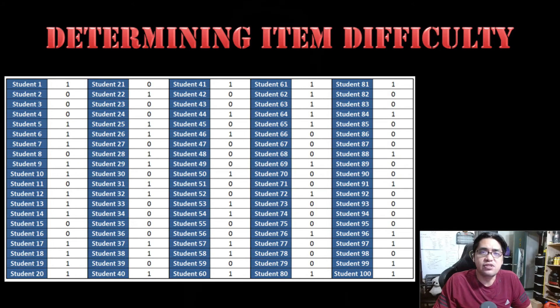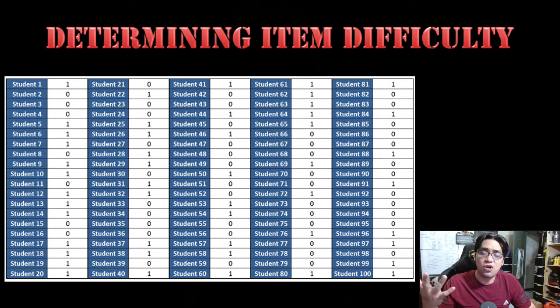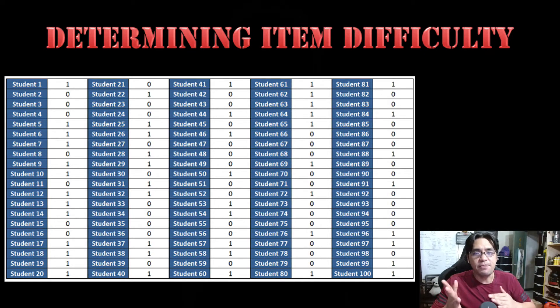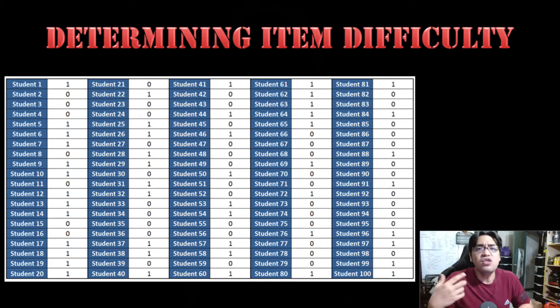So how do you assess item difficulty? There's the intuitive simple way and there's the slightly more difficult but better way. Most teachers will simply count the number of correct scores. For a dichotomous item — meaning an item with simple ones and zeros — you count the number of people who got it correct, divide by the total number of test takers, and you get a percentage. The higher the percentage, the easier the item.